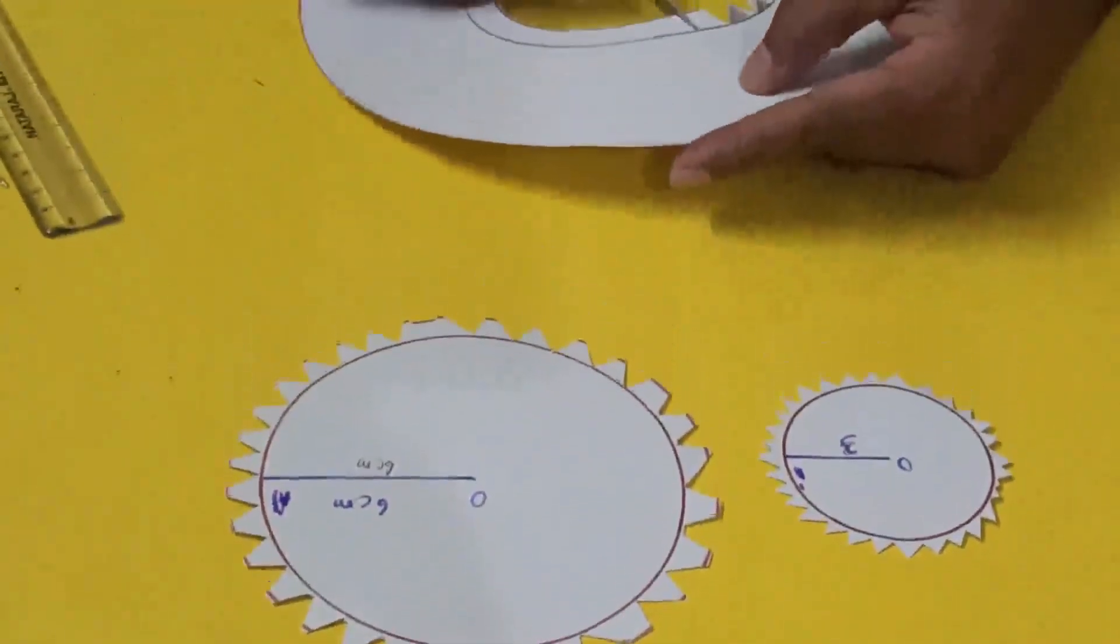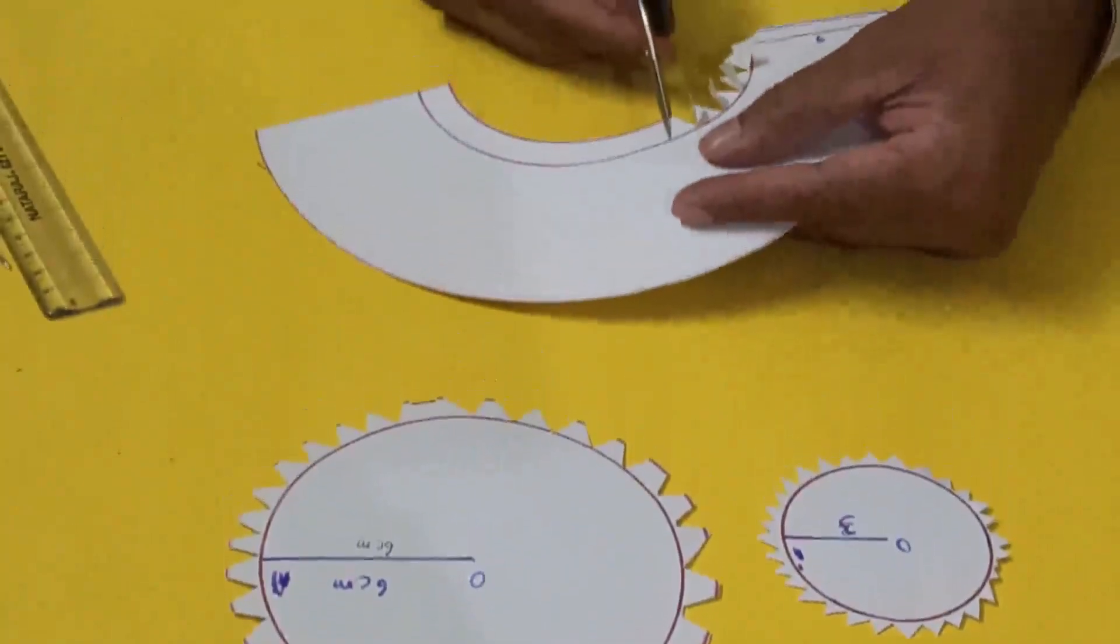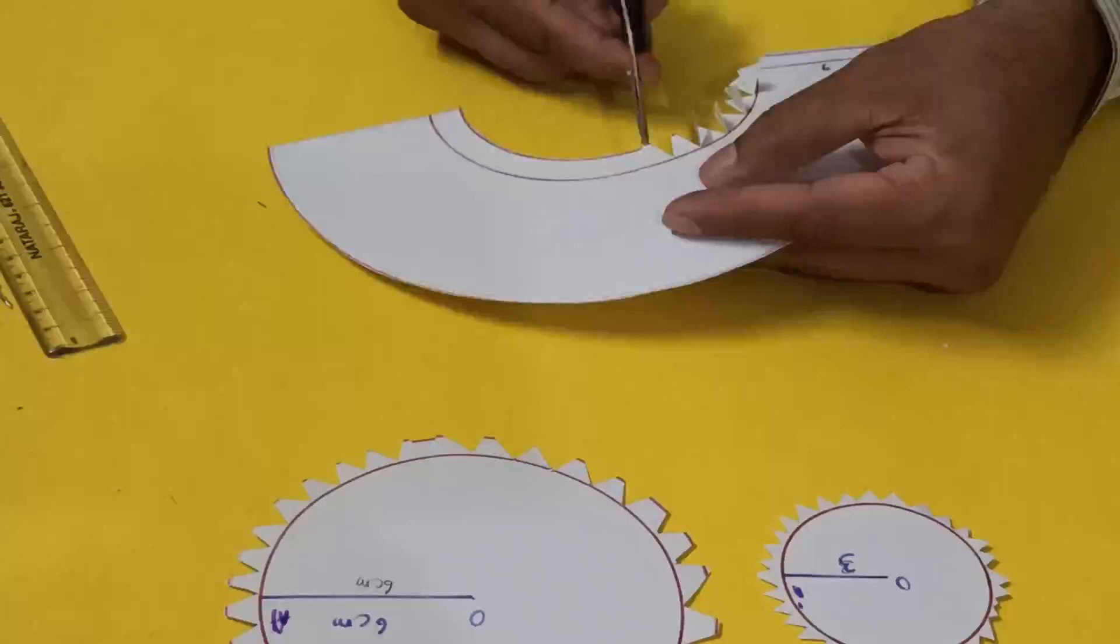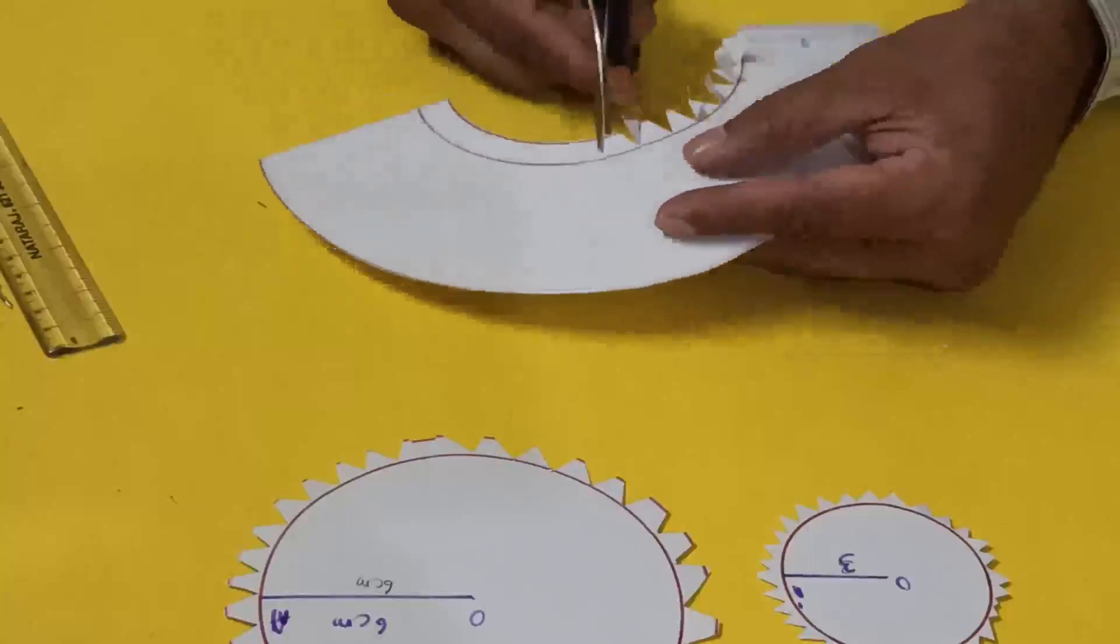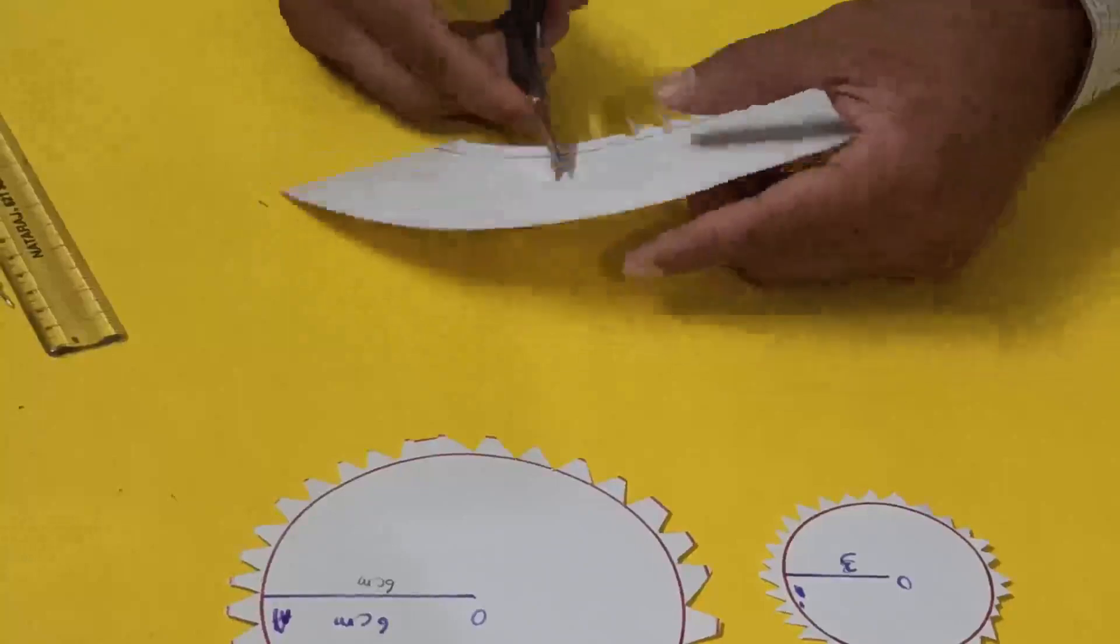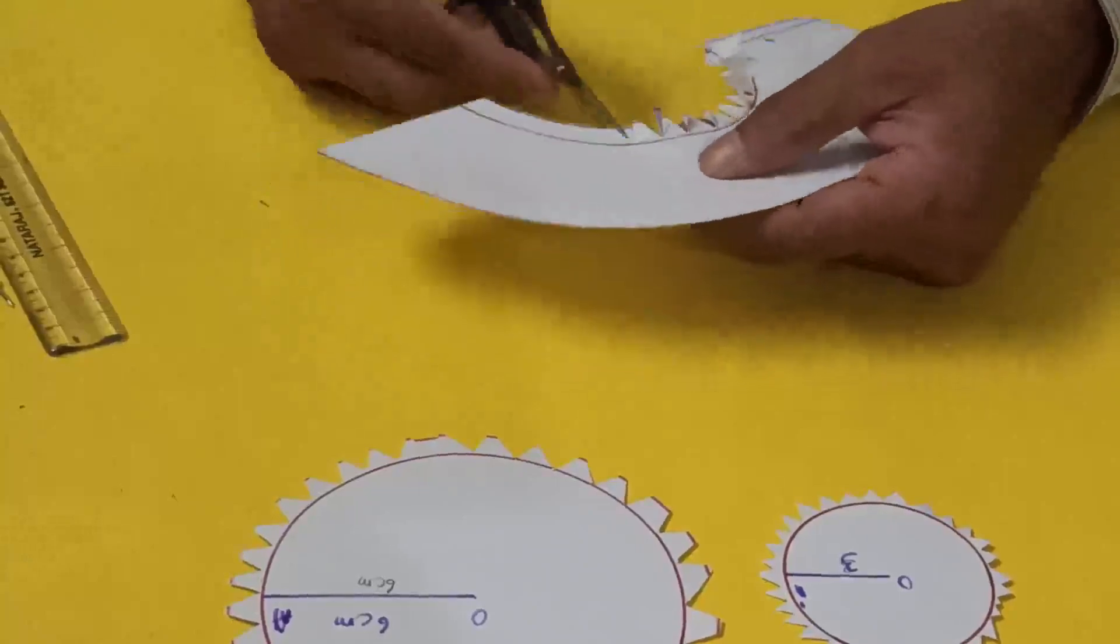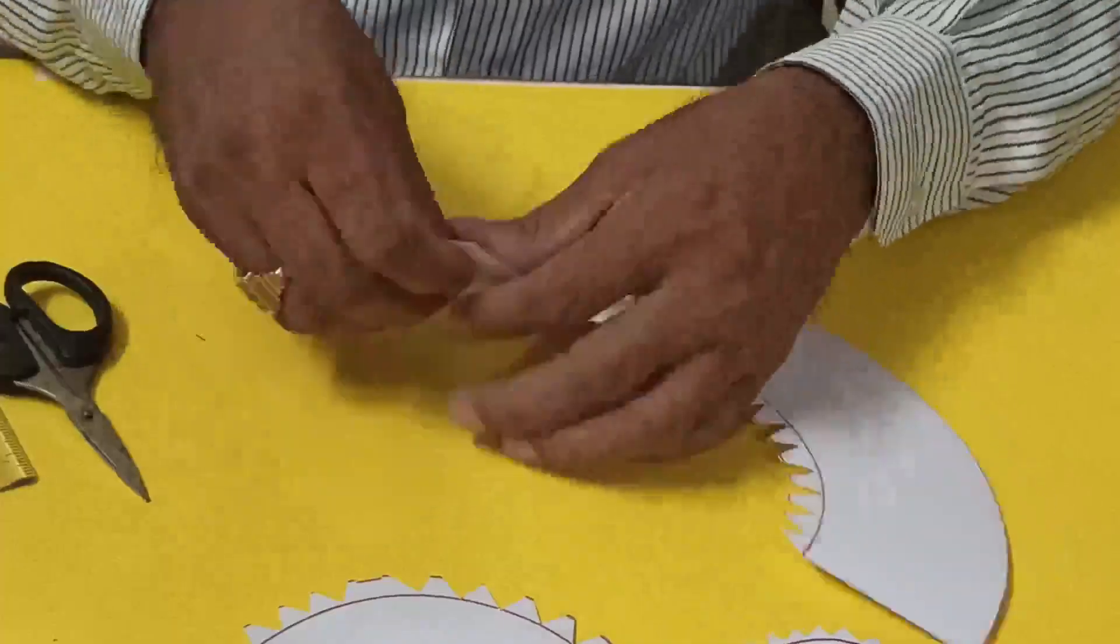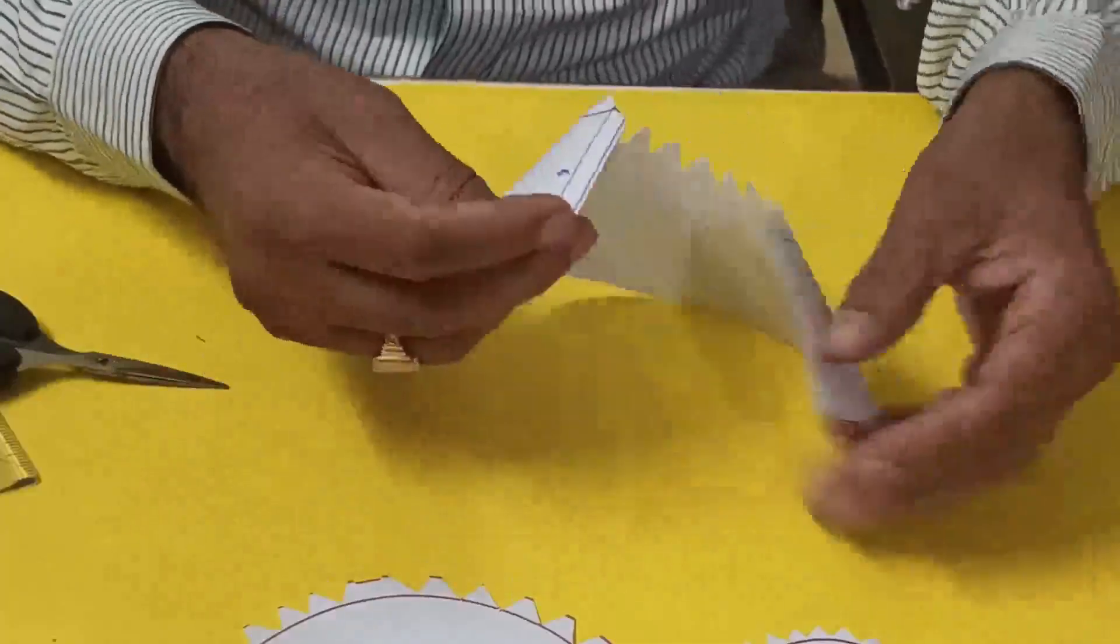Now I'm drawing the slant area. We have to cut it zigzag using the saw-tooth method. Now see, if you connect this one like this.